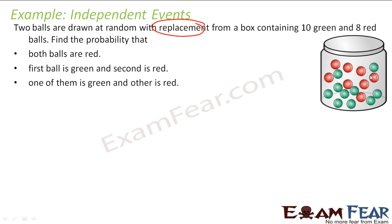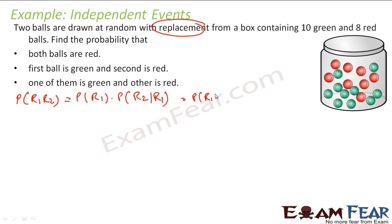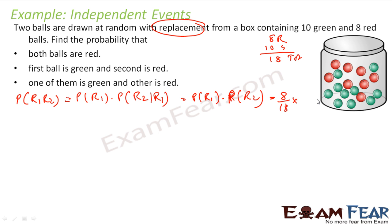If you do not understand this, watch the previous videos. So for both are red: I am looking for probability of first ball red and second ball red. By the multiplication theorem this is P(red 1) × P(red 2 | red 1). Since they are independent, this equals P(red 1) × P(red 2). The probability of getting red is 8/18 because there are 8 red and 10 green, making 18 total. So this becomes 8/18 × 8/18, which is my answer for the first part.